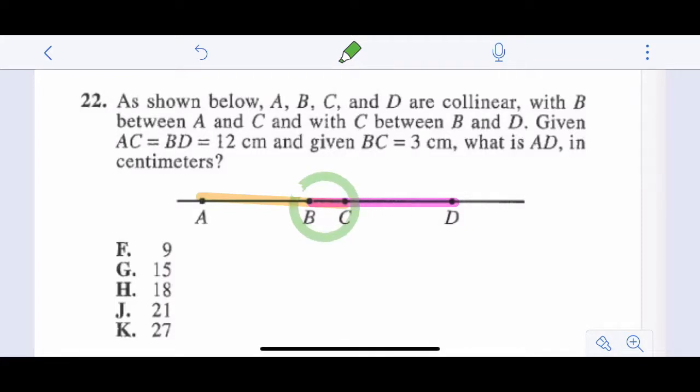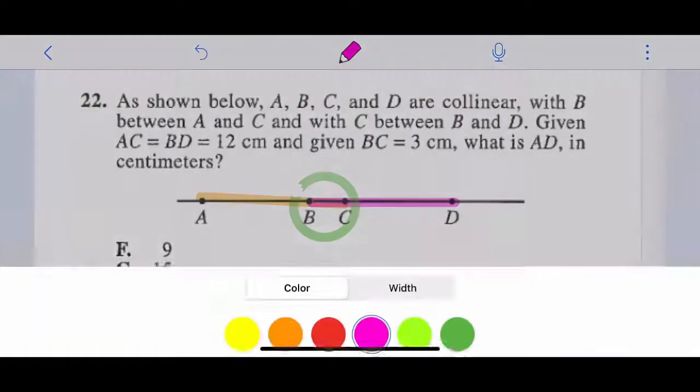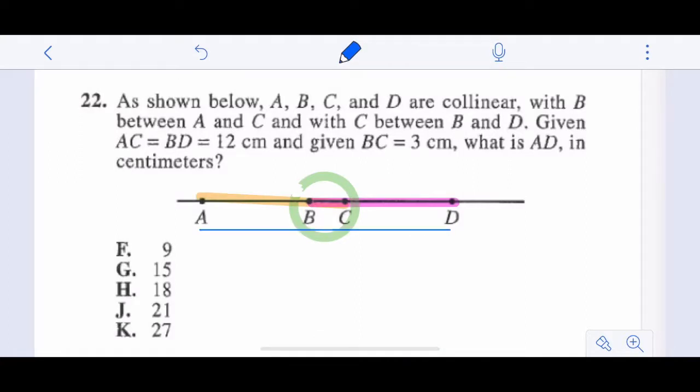What is AD in centimeters? So we just want to know what is the total length from here to here, all the way across. So we know this is 12 from here to here. But we've got to take out this little part here. It should be 12 minus 3, because we already counted it right here within this 12. And then we have this 12 minus the 3 we've already counted. So 12 plus 12 minus 3, or 12 plus 9, and 12 plus 9 is 21. So our answer is J.